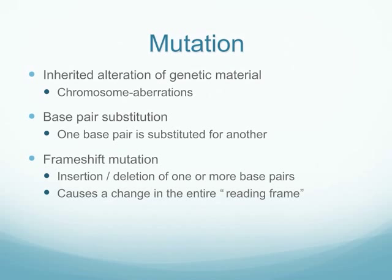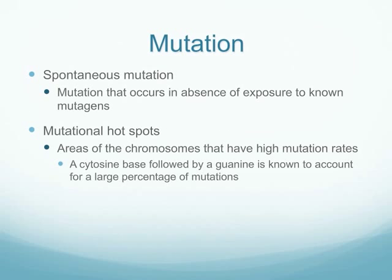Genetic material may be passed down from parents to children in abnormal ways. We can have inherited alterations of genetic material leading to chromosome alterations. We can have base pair substitutions where one base pair is substituted for another, leading to an abnormal chromosome. We can also have frameshift mutations — either an insertion or deletion of base pairs — which creates an entirely new piece of genetic material that probably won't function the same way as the original. Mutations can occur spontaneously or at hot spots along the chromosome that are more prone to mutation.